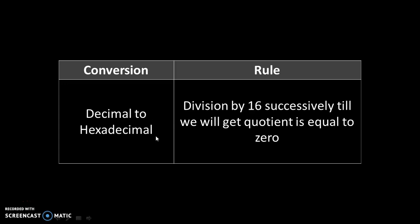Decimal to hexadecimal. Division by 16 successively till we get quotient equal to 0. We are dividing by 16 because the base of the hexadecimal number system is 16.